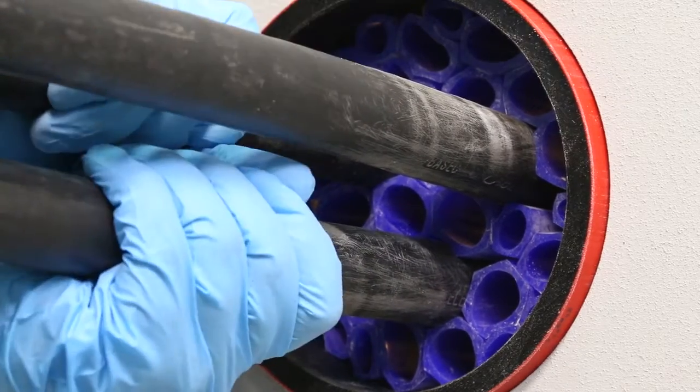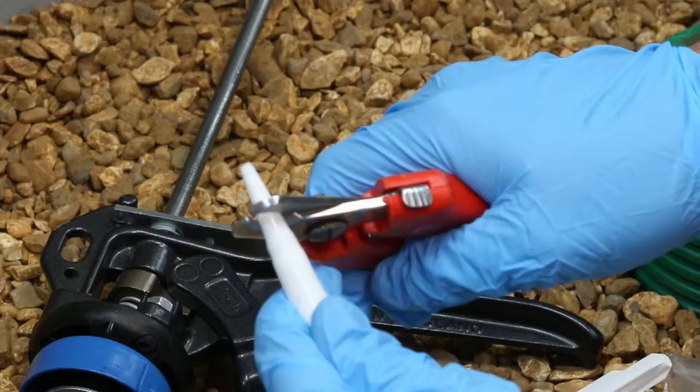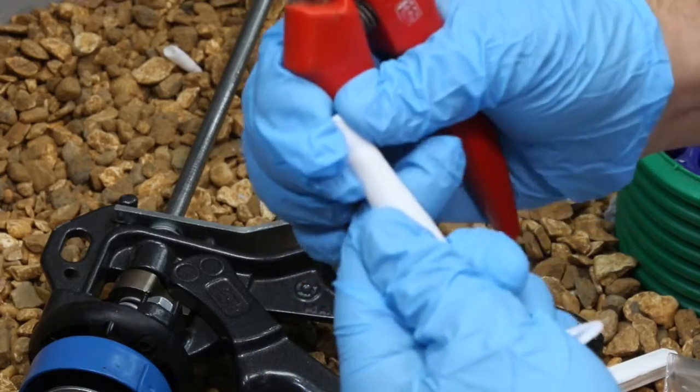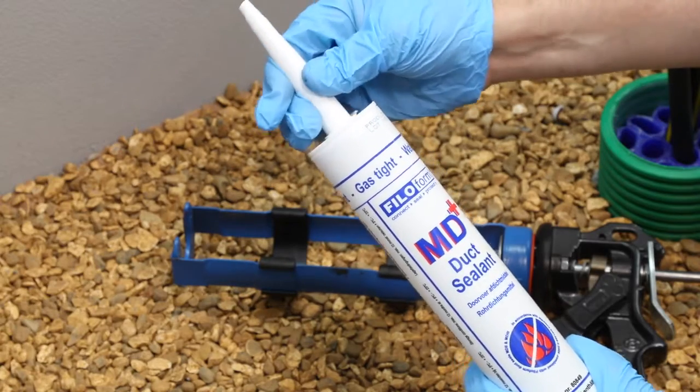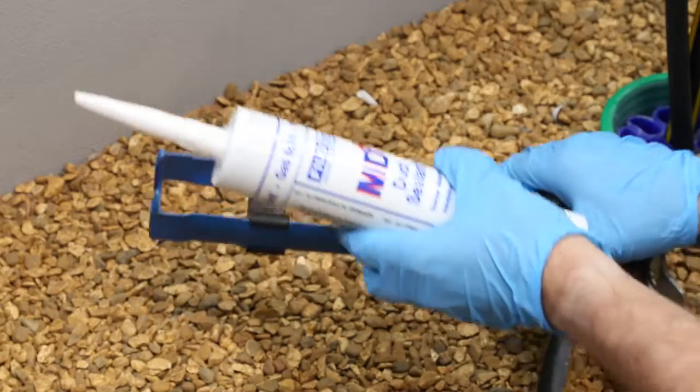Prepare the MD Plus tube by cutting the cartridge and the nozzle using a suitable cutting implement. Insert the cartridge into a high-ratio skeleton gun, which is available from Philoform.